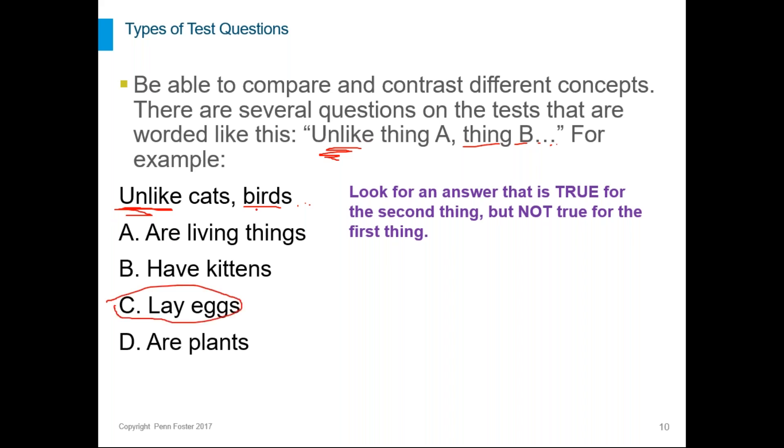Okay, so A is not true because they're both living things. So we can't say A because it doesn't do our job of completing the sentence. Birds are living things. That is true but it says unlike cats. So that means that's not going to work because cats are living things. Birds have kittens. Well, no, they do not. So B is not true. And birds are plants. Well, no, they're not. So the only one that makes sense is C because birds lay eggs and that is unlike cats.